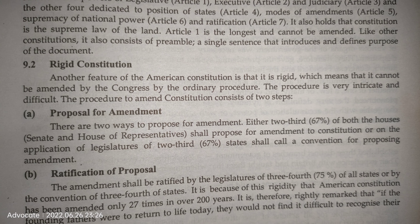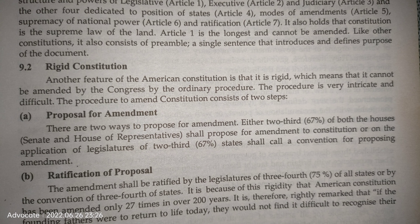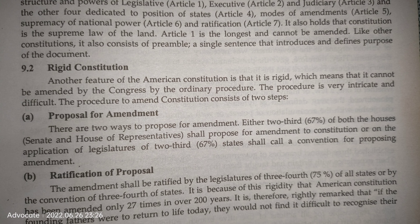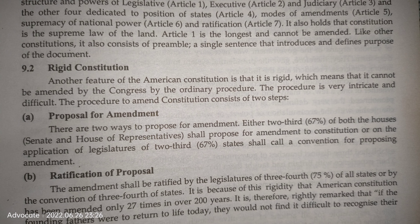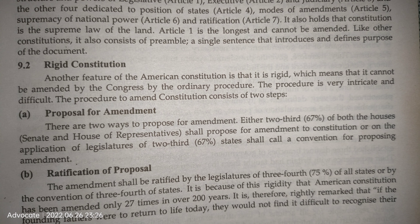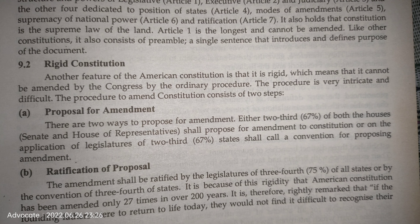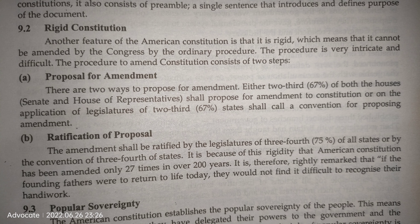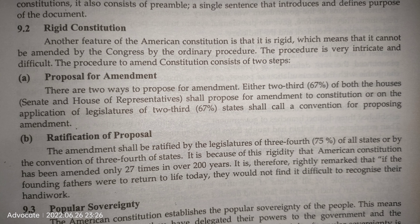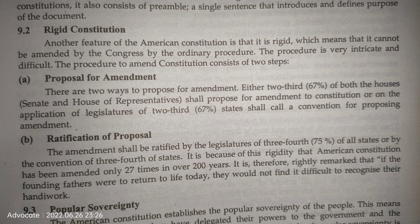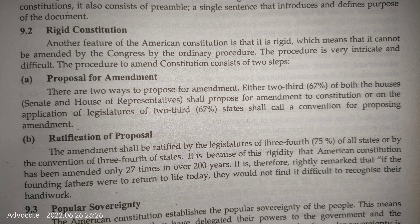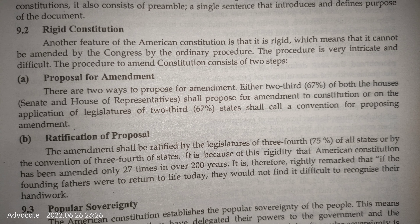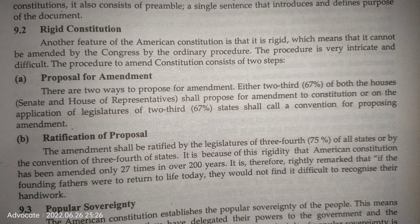Another salient feature of the U.S. Constitution is that it is a rigid constitution, meaning it cannot be amended by Congress through ordinary procedure. The procedure is very intricate and difficult, consisting of two steps: a proposal for amendment and ratification of the proposal. There are two ways to propose an amendment — either two-thirds (67%) of both houses, the Senate and the House of Representatives, shall propose the amendment, or on the application of the legislature of two-thirds of states, a convention shall be called for proposing the amendment.